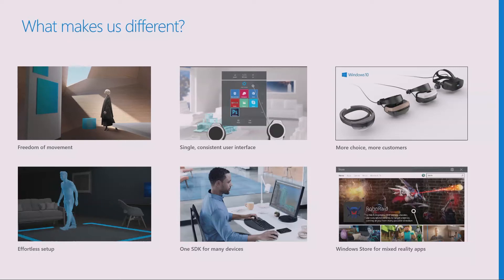Complete freedom of movement — you have six degrees of freedom, you can get up and walk around. If you had a backpack PC, you could plug in an immersive headset and keep walking while it tracks where you are. Effortless setup — no drills, no holes required, nothing in your walls, no external trackers. A single consistent user interface across both device types. One SDK — as a developer, you have one platform, one set of tools to develop for both device types across Windows Mixed Reality. More choice, and a really easy way to deploy applications with the Windows Store.